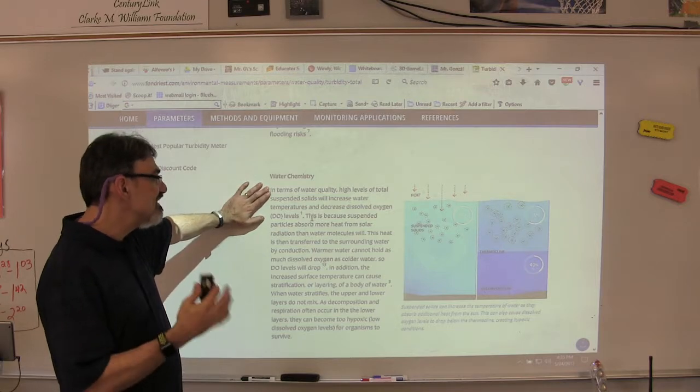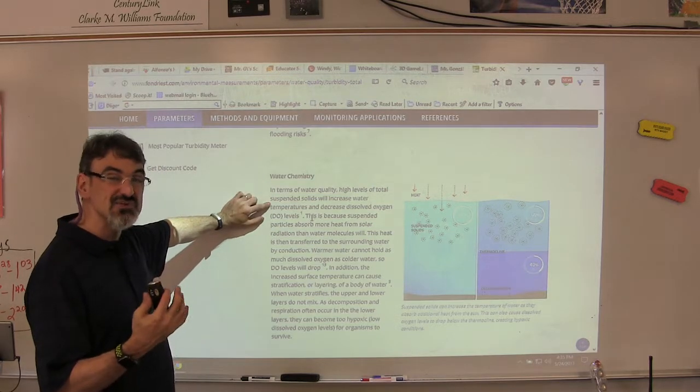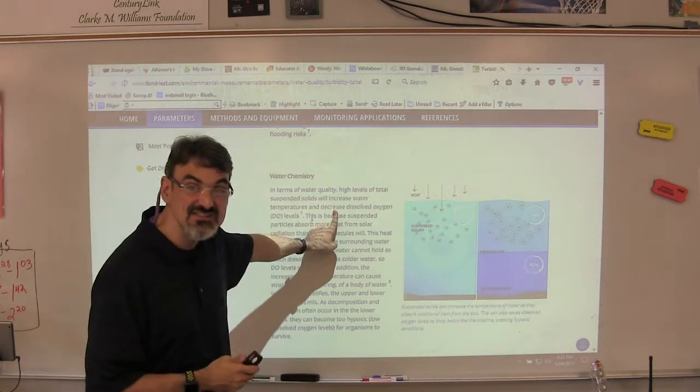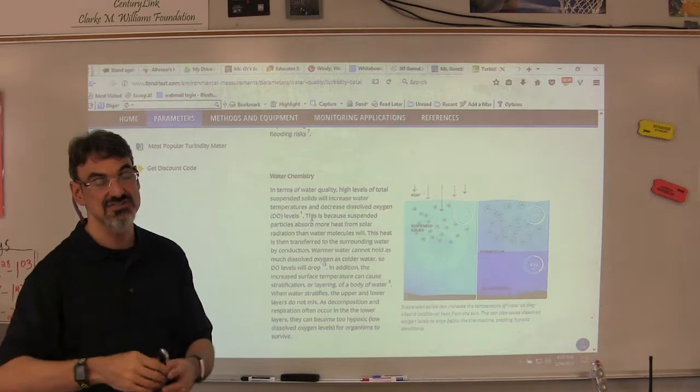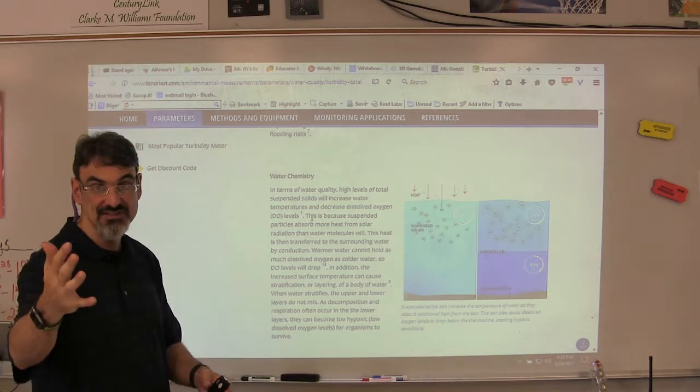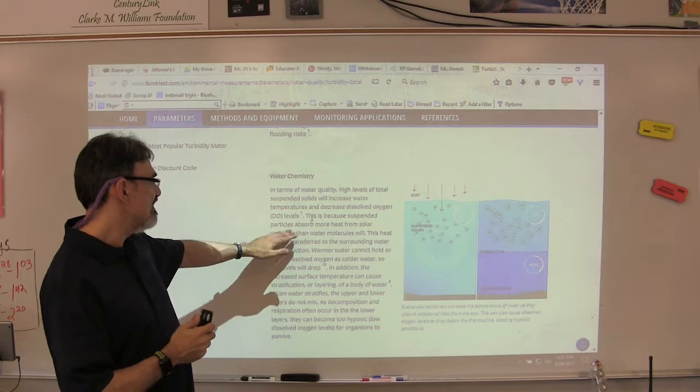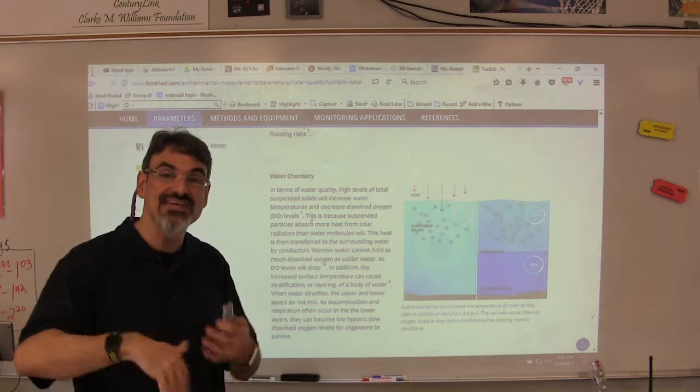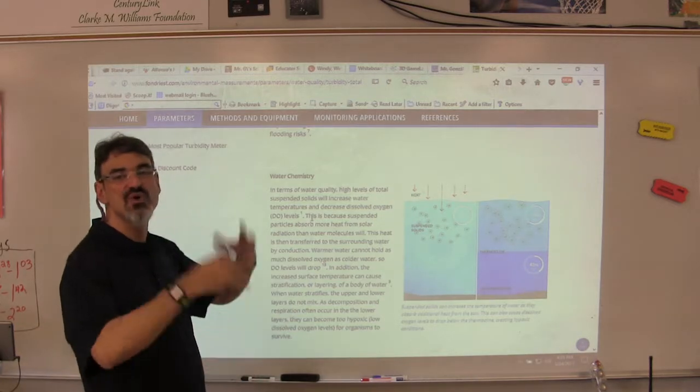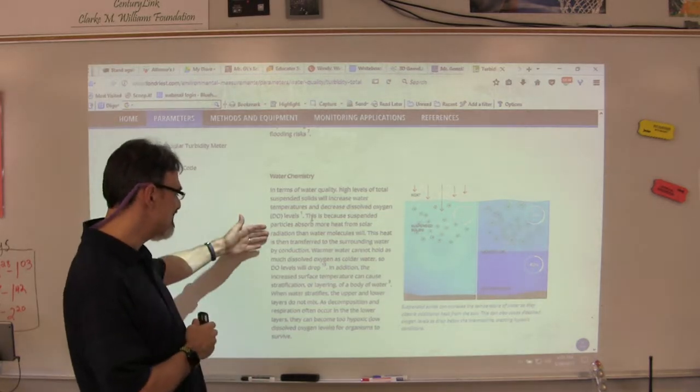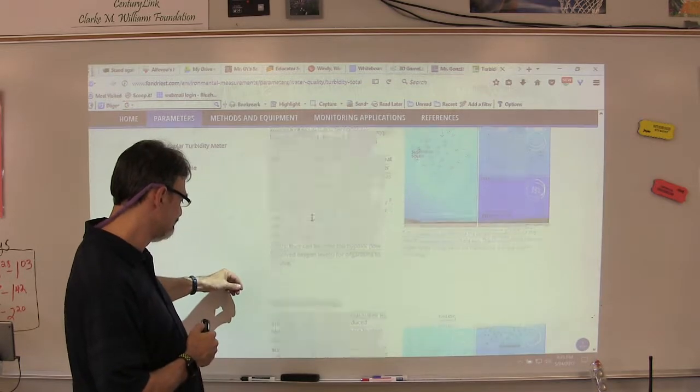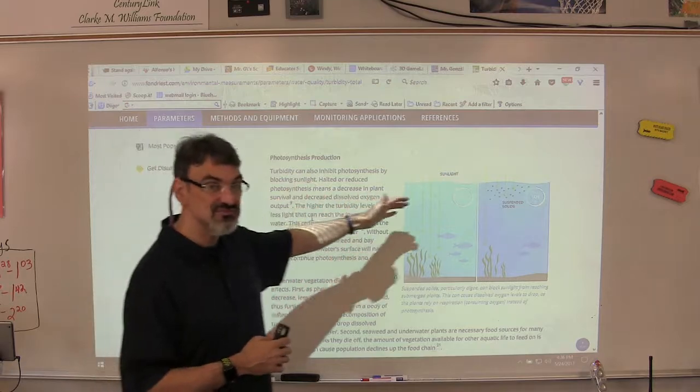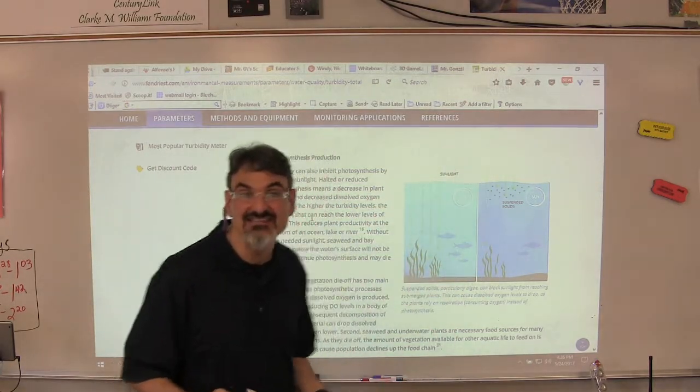Now high levels of suspended solids in the water will increase the temperature and if you talk to your temperature people that's bad and it decreases dissolved oxygen. You talk to your dissolved oxygen teammates or people in the class that's bad. And here's the thing, suspended particles in the water absorb more heat than the water itself and that's why it causes the water temperature to rise and to make the water warmer. It can also, turbidity can inhibit photosynthesis like I just mentioned because the sun can't get to the plants.